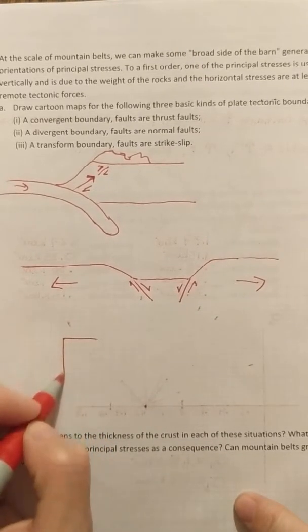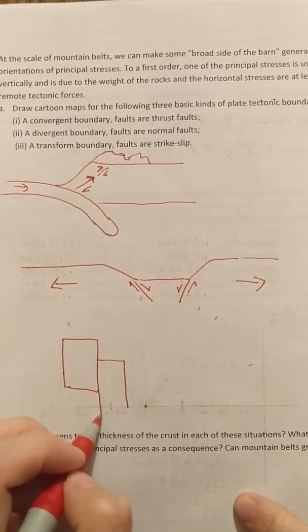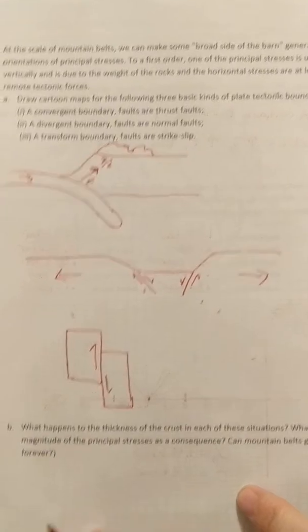And then a transform boundary. Looking from the top down is the best way to do this, where you have one block sliding past another block.